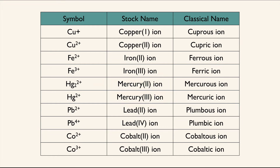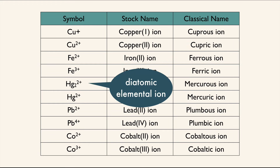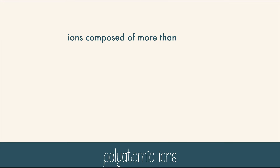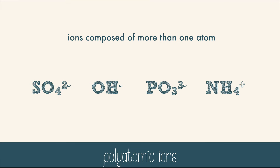So we would say lead 2 and lead 4 ions, or mercury 2 ion, which also happens to be a diatomic elemental ion. Polyatomic ions are composed of more than one atom, like sulfate, hydroxide, phosphite, and ammonium ions. They are tightly bound by covalent bonds and behave as one unit that carries a charge.